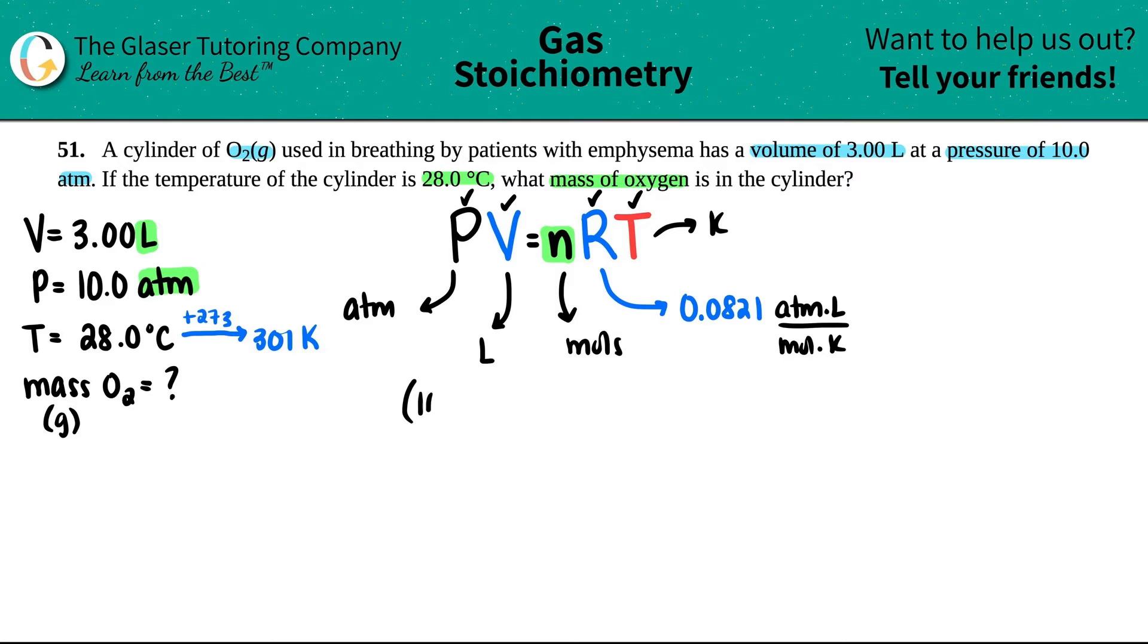Pressure is 10.0. Volume is 3.00 equals, I'm going to put it as x, because that's just a habit. You can put it as n. Do whatever you got to do, whatever letter. This is times the R value, and then the temp now is 301.